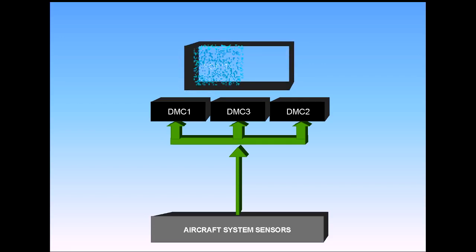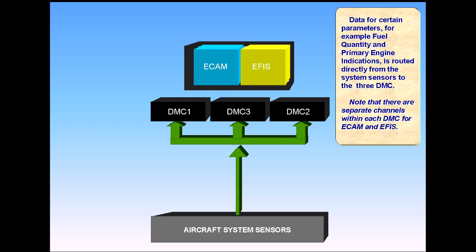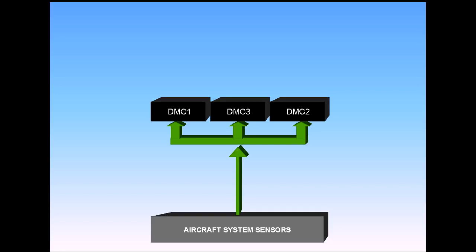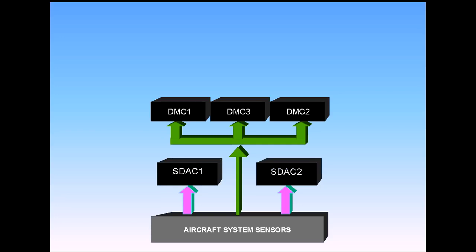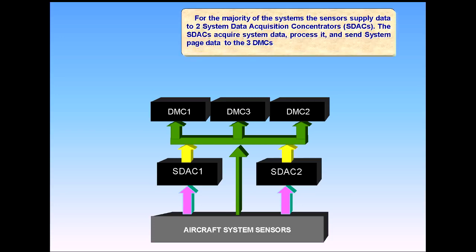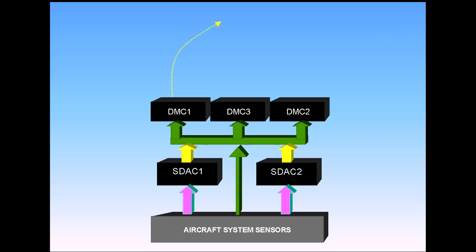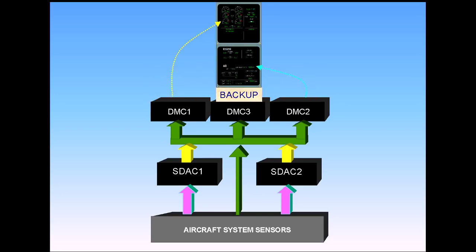Note that there are separate channels within each DMC for ECAM and EFIS. For a majority of the systems, the sensors supply data to two Systems Data Acquisition Concentrators, SDACs. The SDACs acquire system data, process it, and send system page data to the three DMCs. Normally, DMC-1 supplies the Engine Warning Display, and DMC-2 supplies the SD, the System Display.